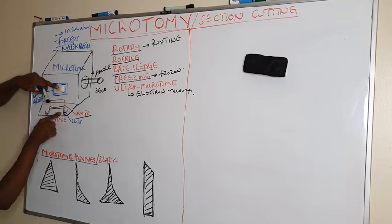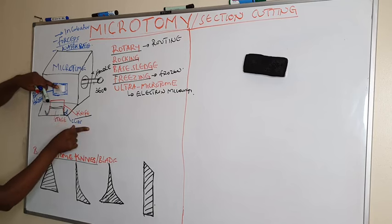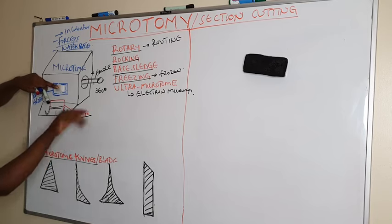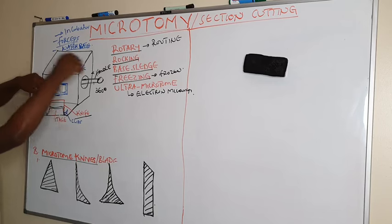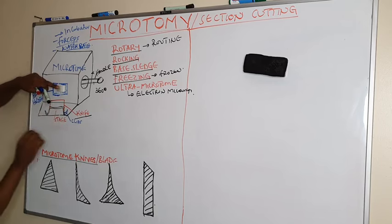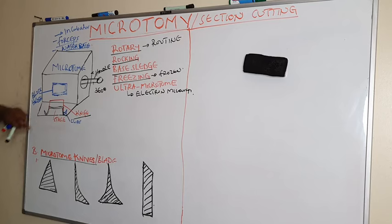The knife is always clipped on the stage — this is the stage of the microtome, and the knife is fixed by the clips tightly. So when we move the handle, the block on the block holder moves past the stationary knife. This is the rough structure of the rotary microtome.